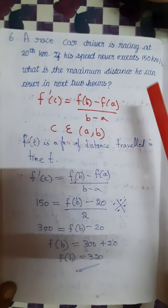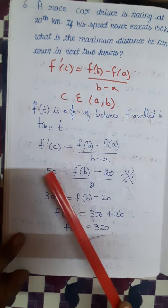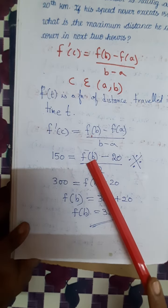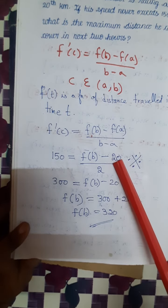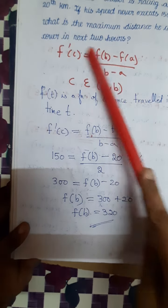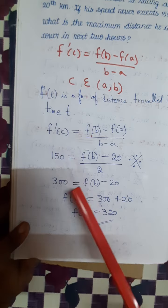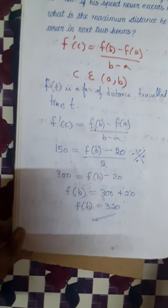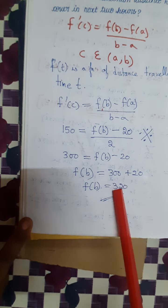The maximum speed limit is 150, so for maximum distance we use maximum speed. f'(c) equals 150. Substituting: f(b) is the distance after 2 hours, f(a) is 20 kilometers, and b minus a is 2. Cross multiplying gives 300 = f(b) - 20, so f(b) = 300 + 20 = 320.